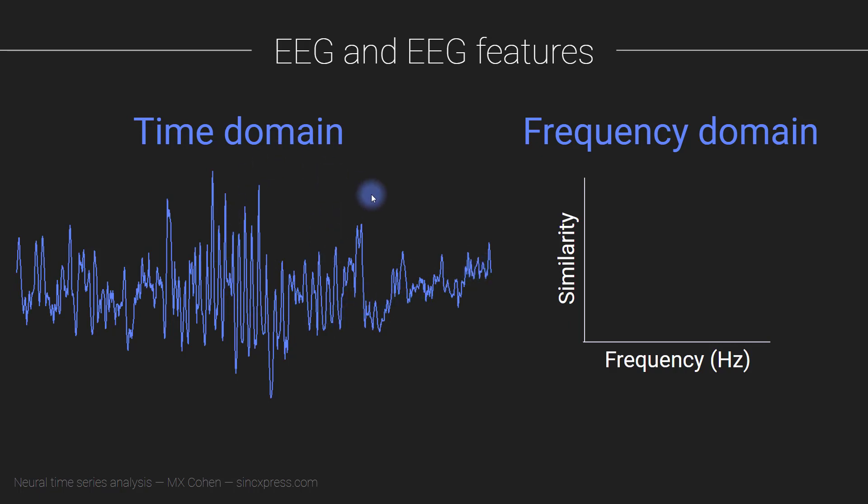This is the time domain. And here we have a graph that's going to be in the frequency domain. This is going to be a power spectrum that we are going to build up. So how do you build up a power spectrum from this time domain signal?